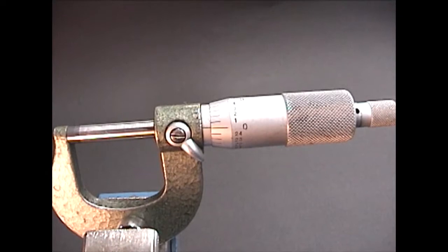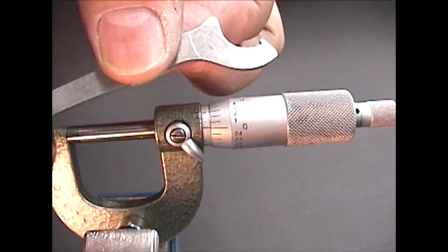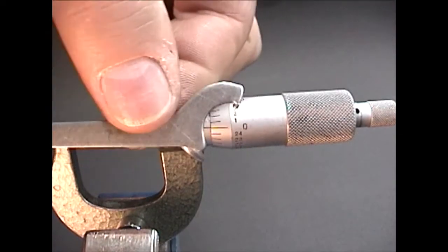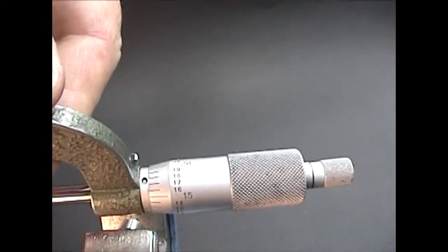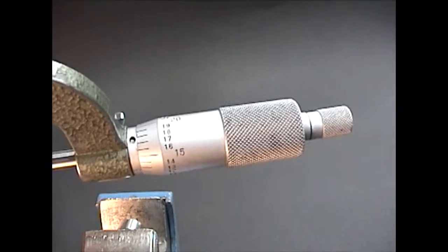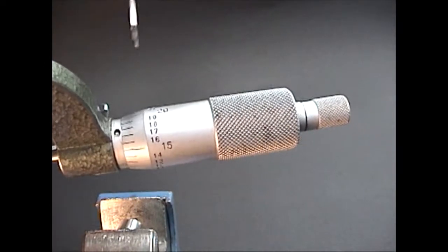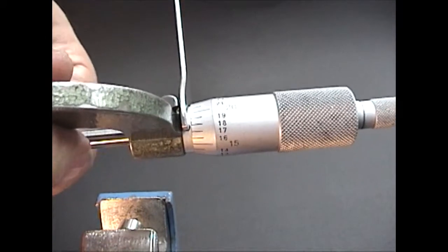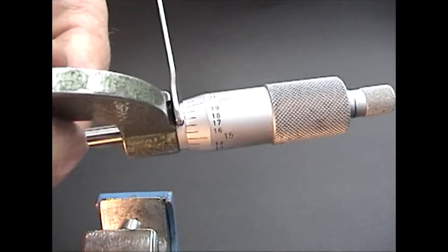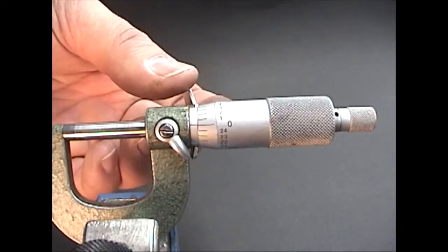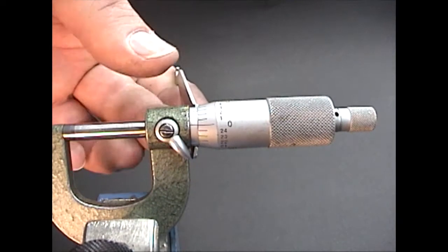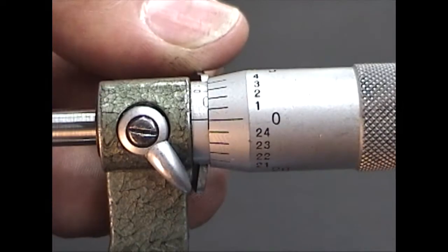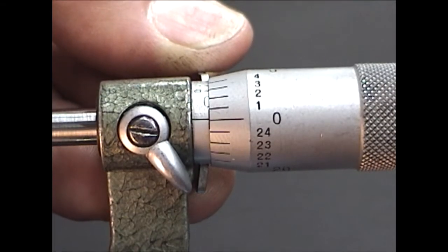On this micrometer, a spanner wrench is needed to turn the barrel. A small hole in the barrel is used with the spanner wrench for calibration. The barrel is rotated to line up the zero marks on the reference line.